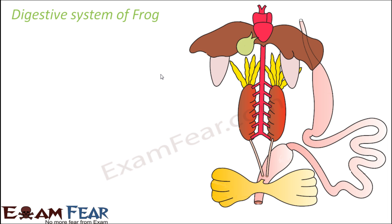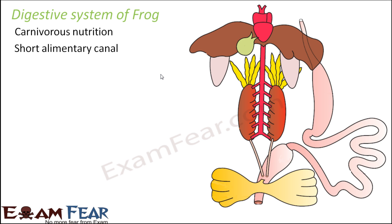The intestine is the main site of digestion. When food can be easily digested, you don't need a long intestine. That is why frogs have a short intestine due to their carnivorous nutrition, and therefore a short alimentary canal. Since the intestine forms part of the alimentary canal, let us look at the different parts which together form the digestive system.